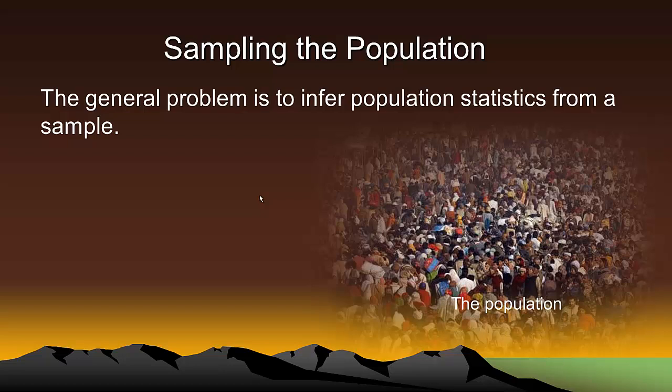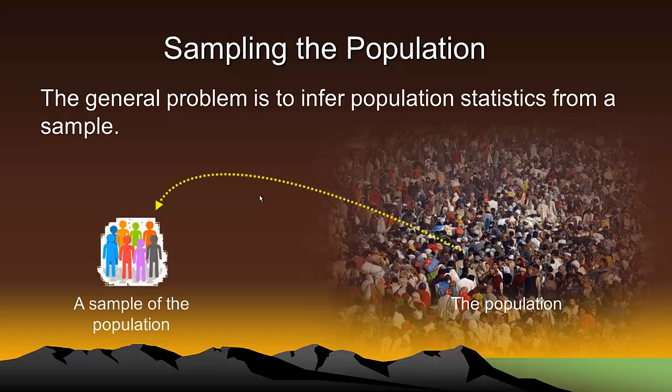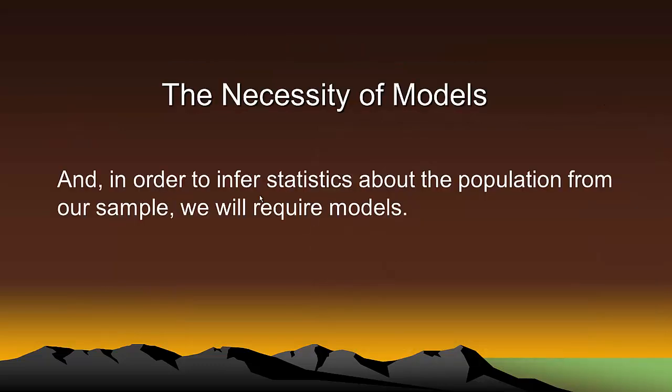The problem in general, then, is to infer population statistics from a sample. In variography, we are typically given a sample of spatial data generally from some earthy population and we wish to infer the patterns of spatial continuity of the earthy populations. In order for us to be able to infer the population statistics from our sample, we're going to have to rely on the use of models of one kind or another. And as you will see in the following slides, models are absolutely necessary.